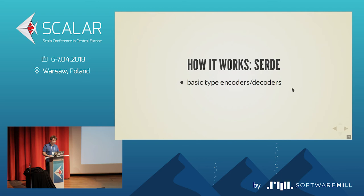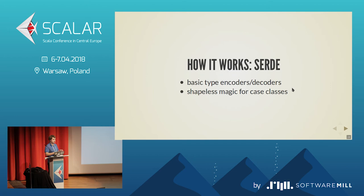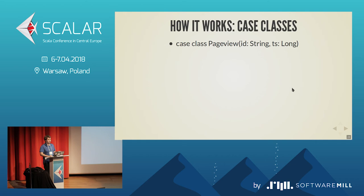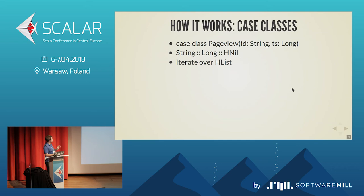For serialization and deserialization, it's the regular approach everyone uses when writing their own JSON library. You have basic type encoders and decoders — just a way to encode and decode strings, integers, and so on from base types. And you can use Shapeless to derive an encoder and decoder for a case class. For our PageView, you can represent it as a generic structure — not just a PageView, but an HList containing a String and a Long — and iterate over this HList at compile time with Shapeless.